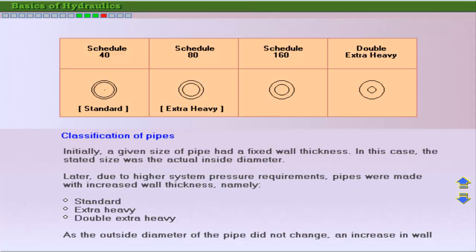Pipes used in hydraulic systems are classified by nominal size and wall thickness. As it became necessary to fabricate pipe to withstand higher pressures, the outer diameter remained the same to accommodate fittings, but the inside diameter was decreased to add strength.